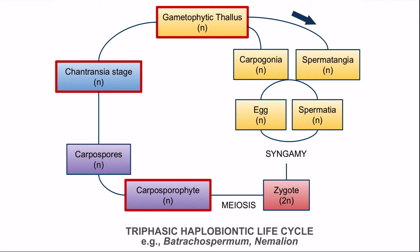In the carposporophyte, carposporangia are present in which haploid carpospores are formed. These carpospores germinate and develop to form the Chantransia stage, which is also haploid, and this third Chantransia stage develops into the gametophytic thallus.